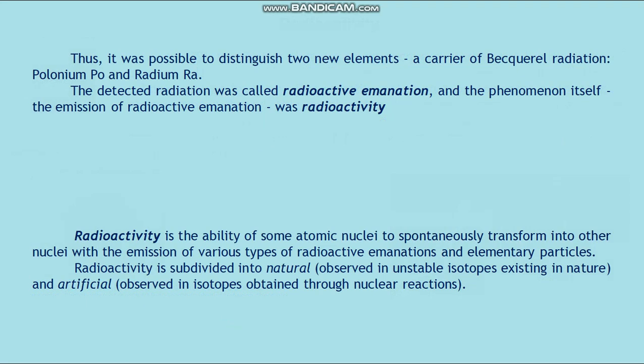They also found that uranium resin blend, the ore from which uranium is extracted, emits radiation whose intensity is many times greater than the intensity of uranium radiation. Thus, it was possible to distinguish two new elements, carriers of Becquerel radiation: polonium and radium. The detected radiation was called radioactive emanation, and the phenomenon itself, the emission of radioactive emanation, was radioactivity.